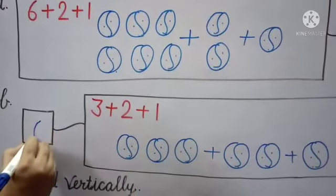Next, Number 2: Add Vertically. Vertically means in a standing line, we will add the given numbers.